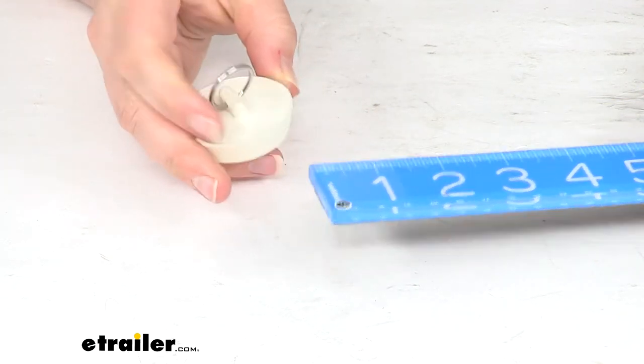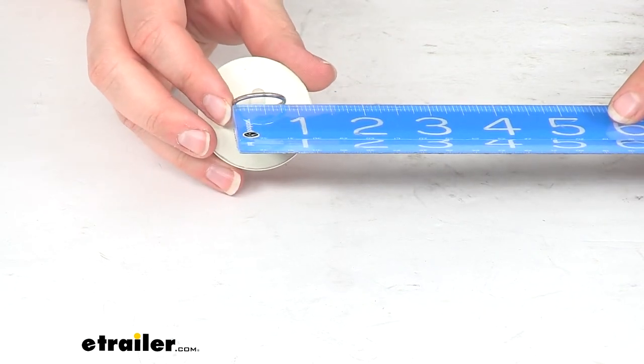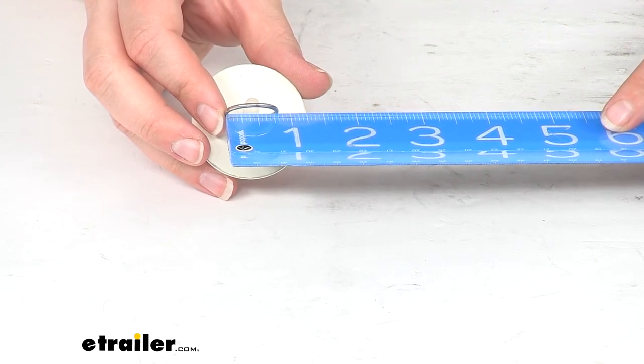We'll have the ring at the top so we can pull that out of place. Just for reference, I'm going to give you that diameter. It's about 7 eighths of an inch outside, about 3 quarters of an inch inside.